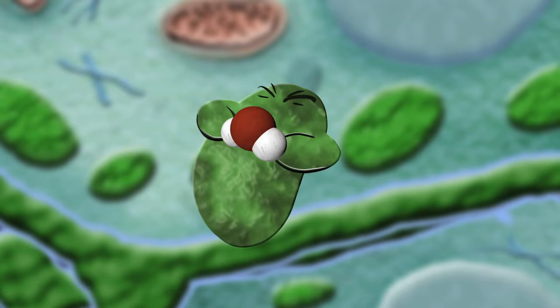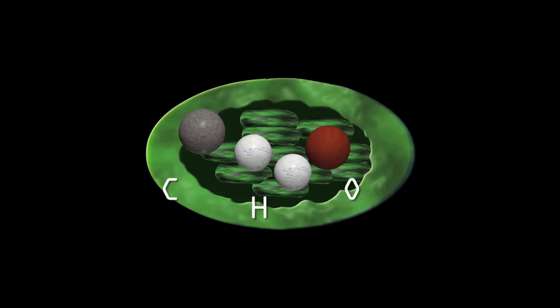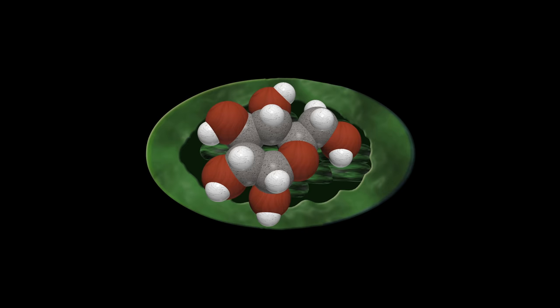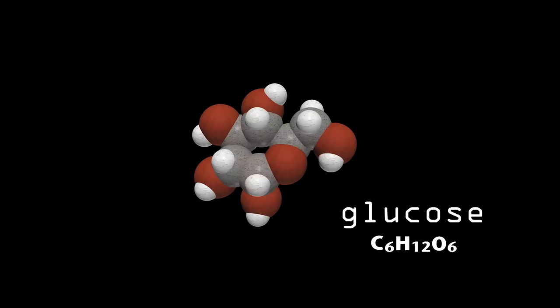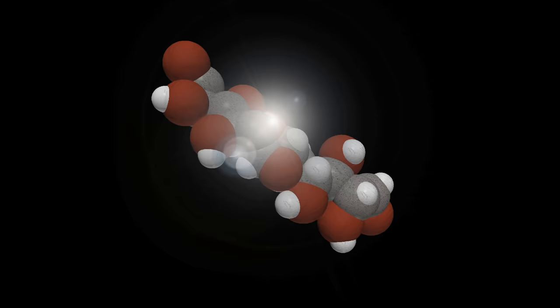So now that the chloroplast has all the building blocks — carbon, hydrogen, oxygen, and electrons — it can use them to go through the rest of the steps of photosynthesis to transform that original carbon dioxide gas into a simple carbohydrate called glucose, C6H12O6.